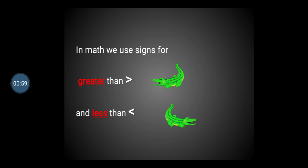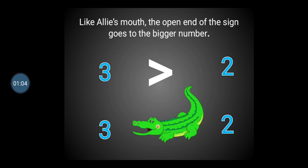In maths, we use signs for greater than and less than. Like Ali's mouth, the open end of the sign goes to the bigger number. So, the number 3 is bigger than the number 2. The open end of the sign is pointing towards the number 3, and the closed end is pointing towards the number 2, which is smaller than the number 3.